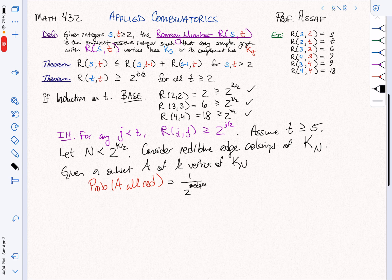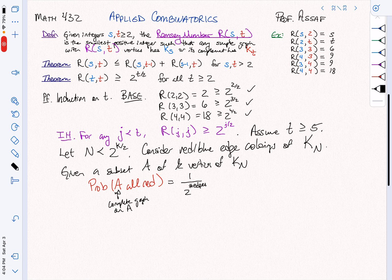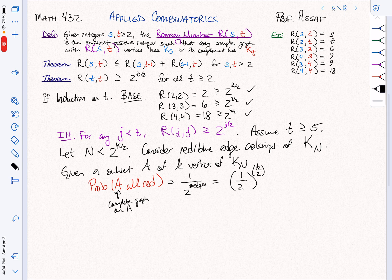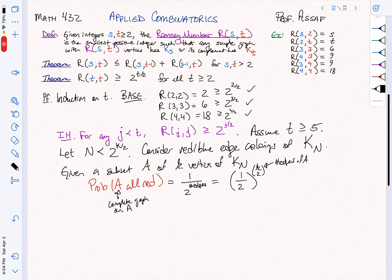I said that we have K vertices. So I know that we have K choose 2 edges, if I'm thinking about the complete graph. So this is a complete graph on A, the subset of vertices. And remember, the size of A is K, so this is one half to the K choose 2. And that's because this is the number of edges of A. That's the probability that it's all red.